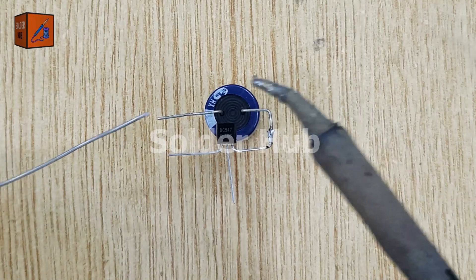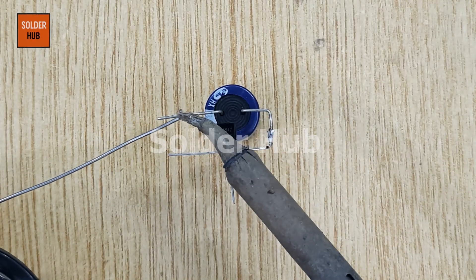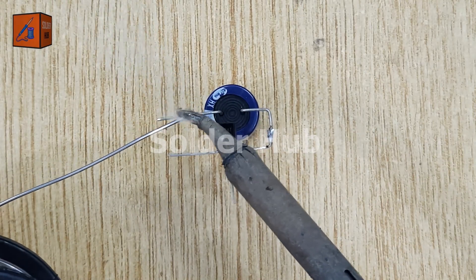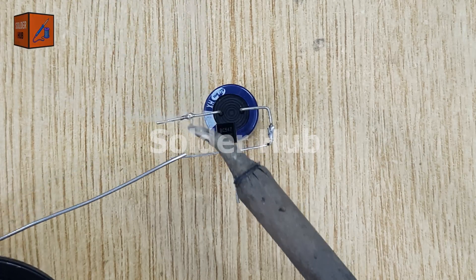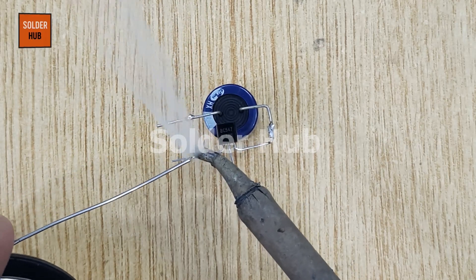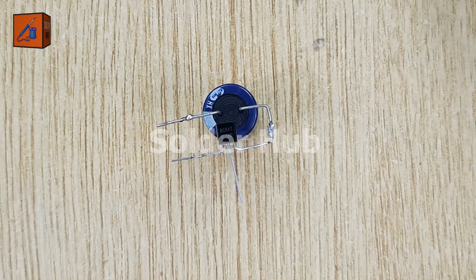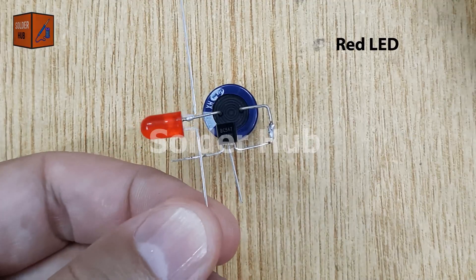Then, I apply some solder on the negative pin of the capacitor and on the collector pin of the transistor. This setup allows the transistor to control the current flow through the LED based on the charge and discharge of the capacitor.